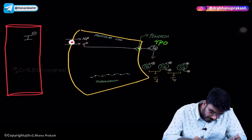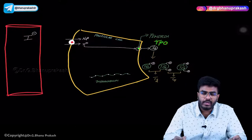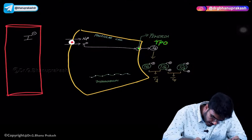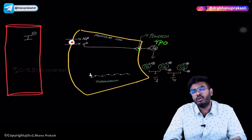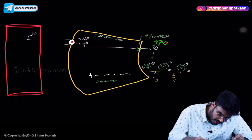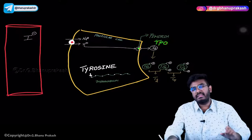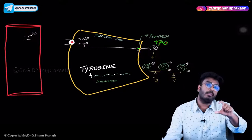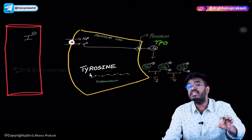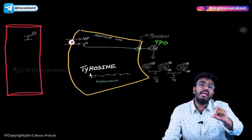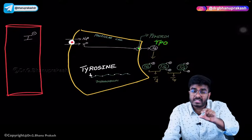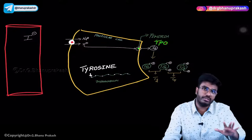On the thyroglobulin, I have made white dots intentionally. These white dots represent tyrosine amino acids. Thyroglobulin is a protein which contains high amounts of tyrosine amino acids or tyrosine residues.